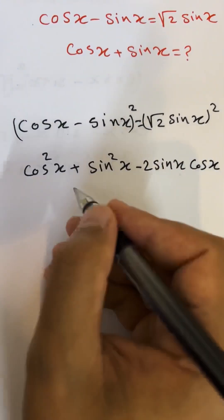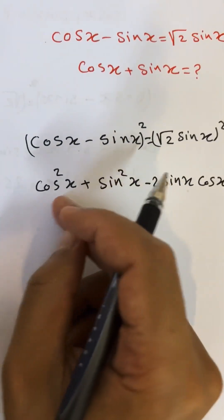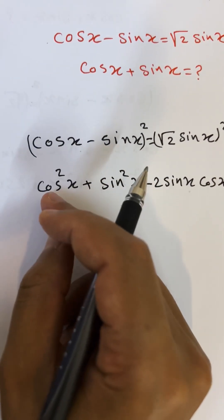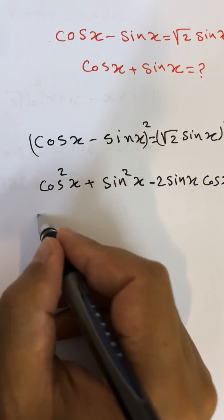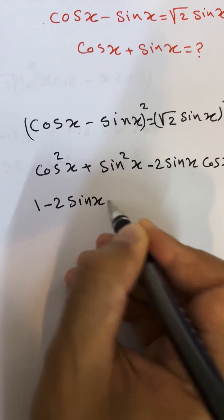Now for the right side. As you know this identity: cosine squared x plus sine squared x equals 1. So you have 1 minus 2 sine x cosine x.